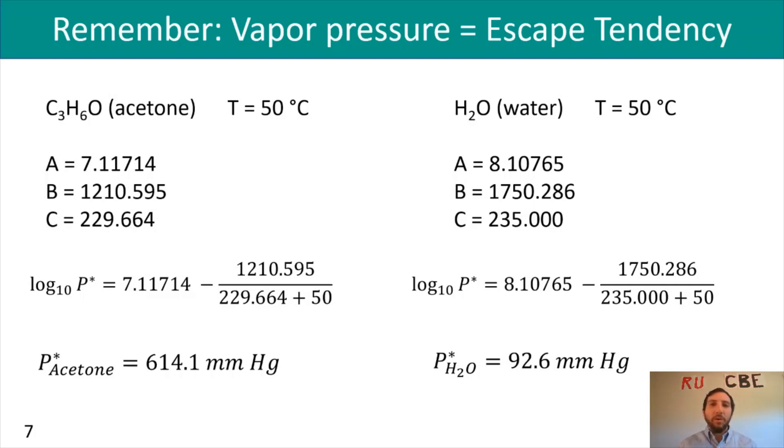As I mentioned in part one, vapor pressure is our escape tendency. The higher your vapor pressure, the higher the likelihood that your compound will escape into the vapor phase. Comparing acetone's vapor pressure with water's, we see that acetone is much greater. This makes sense because if you spill water on your countertop it stays there for a while, but acetone vaporizes very quickly. That's because acetone is a volatile compound with high vapor pressure.